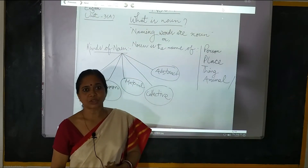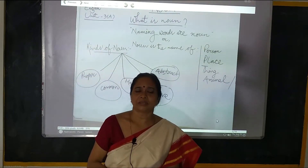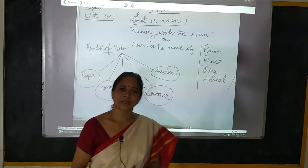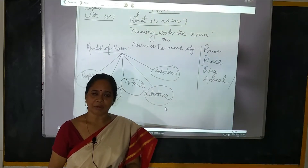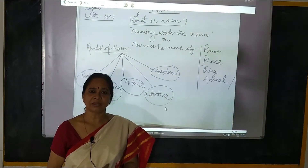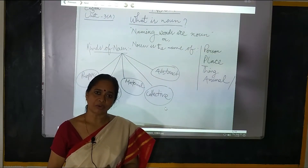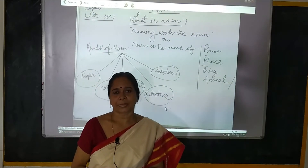Jiska kuch naam ho, wo hai Noun. Iska definition dete hai. Noun is the name of a person, place, animal, thing or feelings — bhavna hai.